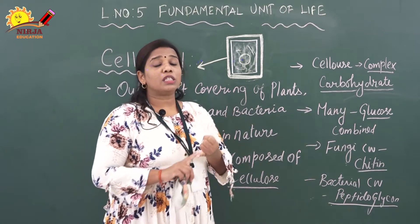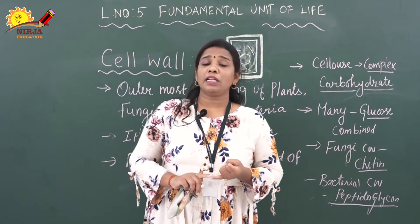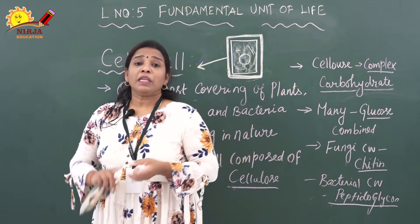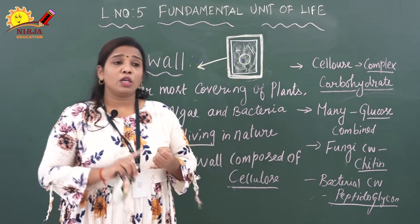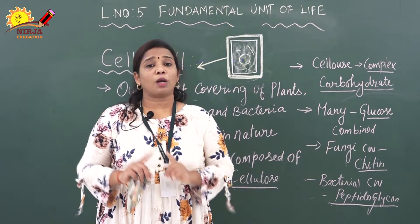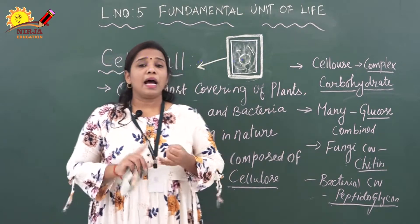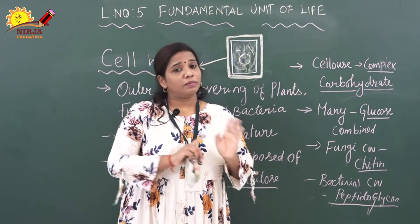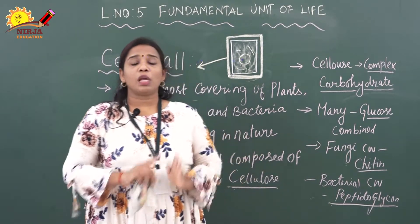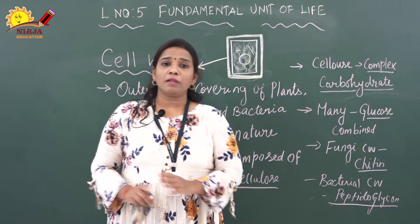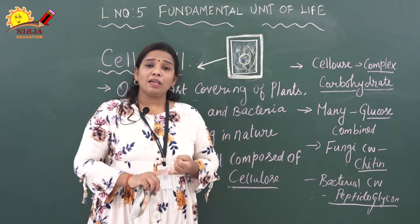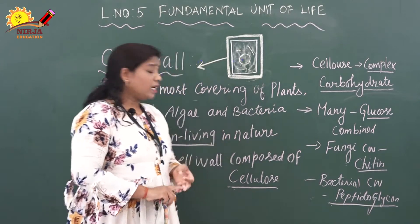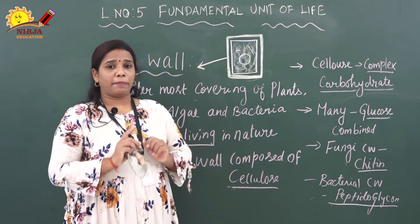To summarize: the cell wall is the outermost covering of plant, fungi, algae, and bacteria. It is made up of cellulose, which is a complex carbohydrate. The fungal cell wall is made up of chitin, and the bacterial cell wall is made up of peptidoglycan. The cell wall is rigid, thick, and non-living in nature, and it is a fully permeable membrane.